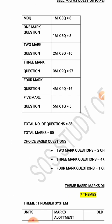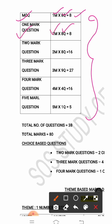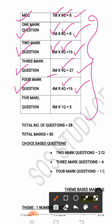The general question paper pattern is as follows: First, MCQ — 8 questions for 8 marks. Second, 1-mark questions — 8 questions for 8 marks. Third, 2-mark questions — 8 questions for 16 marks. Fourth, 3-mark questions — 9 questions for 27 marks. Fifth, 4-mark questions — 4 questions for 16 marks. Sixth, 5-mark questions — 1 question for 5 marks.